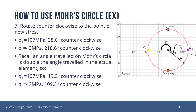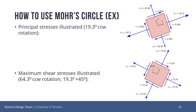Now that we have our principal stresses, we must make one more adjustment. Recall that an angle rotated on Mohr's Circle represents twice the rotation on the actual element. This means we must divide our angles by two. Sigma 1 is 107 MPa at 19.3 degrees counterclockwise, and sigma 2 is 43 MPa at 109 degrees counterclockwise. The maximum shear stress occurs at tau xy-prime, denoted as the brown dots on the circle as shown.